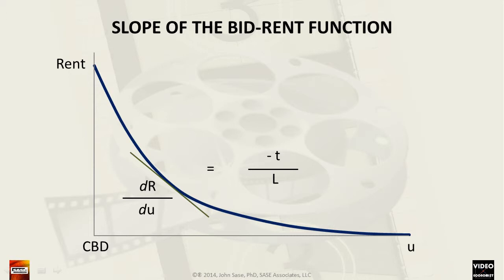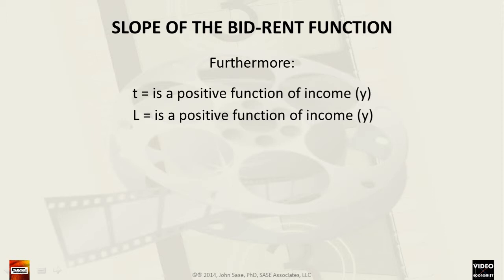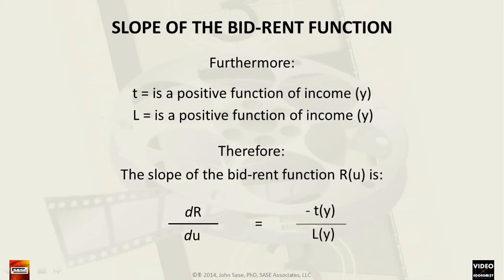This suggests that the individual values of small t commuting cost and large L demand for land, as well as the ratio of small t and large L, may vary with distance from the CBD. Generally, we assume that commuting cost small t is a positive function of income such that as income increases, the preference for more comfortable and swifter transport offering greater privacy will be chosen. Likewise, the demand for land, large L, is a positive function of income such that greater quantity and quality will be chosen. Therefore, the ratio of these two functions will be negative with a rate of change that decreases at a decreasing rate as the radial distance from the city center increases.